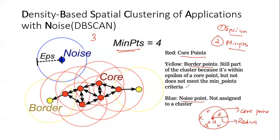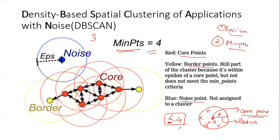To consider a point as a core point, there are two conditions. First, I create a boundary with radius equal to the epsilon value. Second, the minimum number of points falling within this boundary should be at least four. If there are more than four points, that's fine too — but at least four points must fall within this boundary for me to consider it a core point.